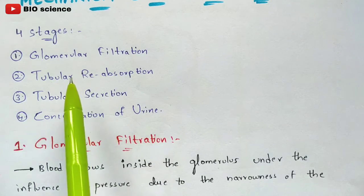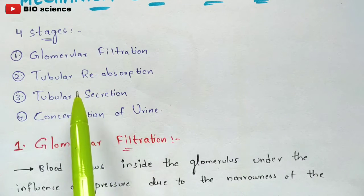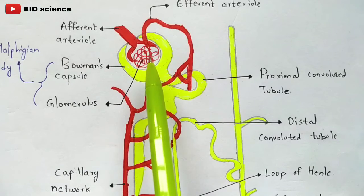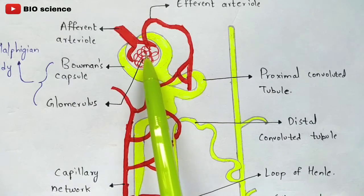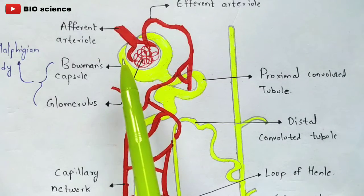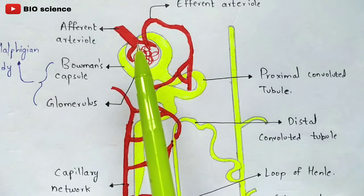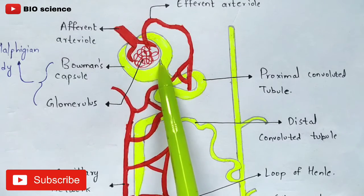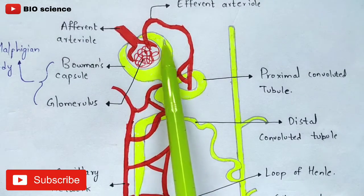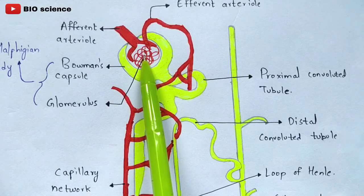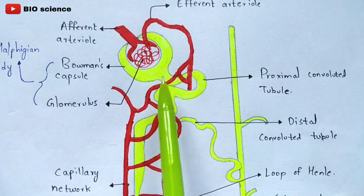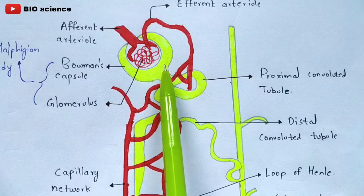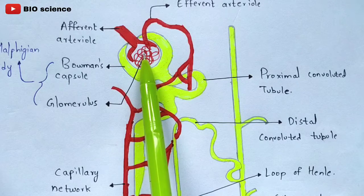Now we are going to discuss the second stage called tubular reabsorption. In the first stage the blood gets filtered, and the remaining waste material is called filtrate. That filtrate will enter into the Bowman's capsule. In scientific terms, the filtrate is called primary urine. So after the blood gets filtered, the waste material present inside the glomerulus enters into the Bowman's capsule as primary urine.